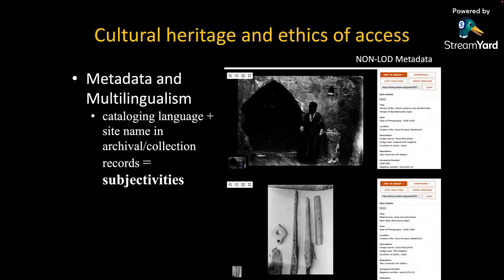On the topic of cultural heritage and the ethics of access: we don't often think about the fact that metadata - the factual statements about a collection object, like the title, the place it depicts, even its size - the cataloging language and site name used to describe an image in non-linked open data metadata carries subjectivity, and we're essentially creating only one pathway into discovering an object. For instance, the name 'Dura Europos' is not so straightforward - different languages spell it different ways, French colleagues often prefer 'Europos Dura,' and Arabic or Japanese speaking colleagues will have different ways of spelling the name using their own writing systems.